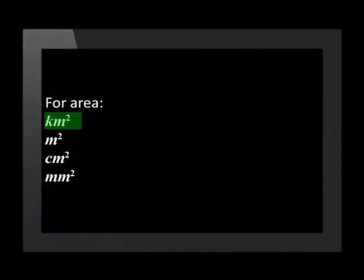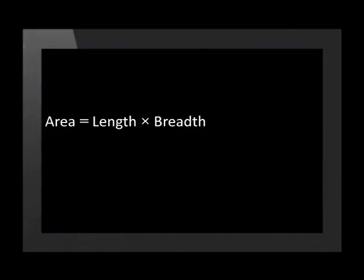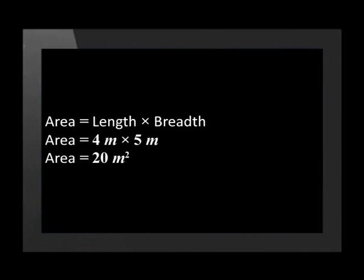For area, we use kilometers squared, meters squared, centimeters squared, and millimeters squared. When something is squared, it means to the power of two. The units for area are squared because of the formula we use when we calculate area. This formula is: area is equal to length times breadth. Both length and breadth should be in the same unit, which means that when they are multiplied by each other, the unit for area is squared. To calculate the area of a rectangle with length equal to 4 meters and breadth equal to 5 meters, we substitute into the formula: length is replaced by 4 meters and breadth by 5 meters. 4 times 5 is equal to 20, and meters times meters is equal to meters squared.